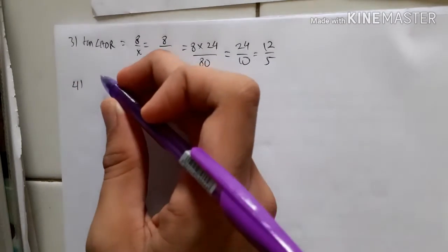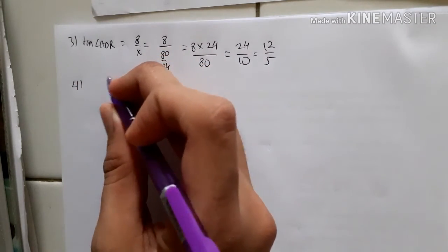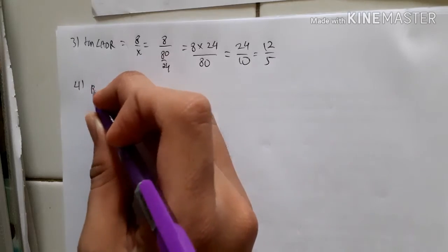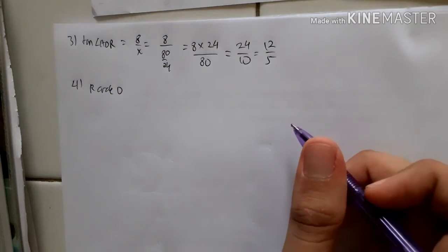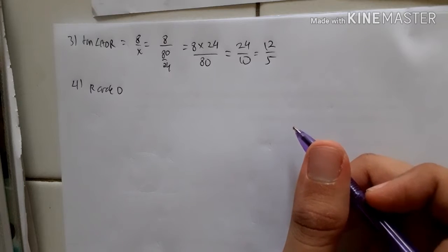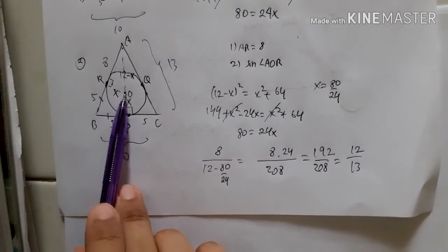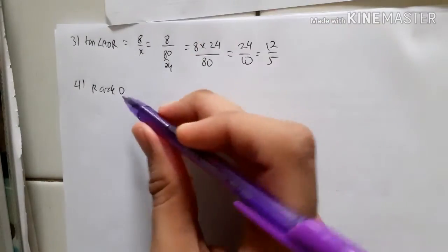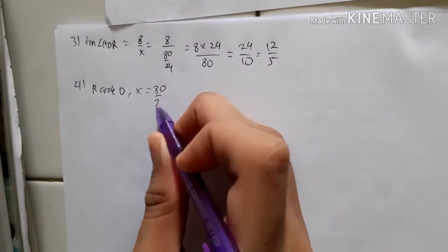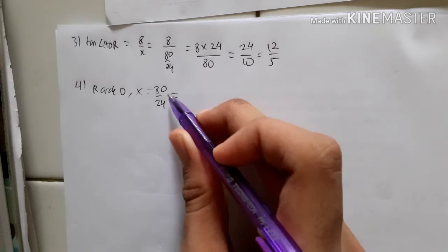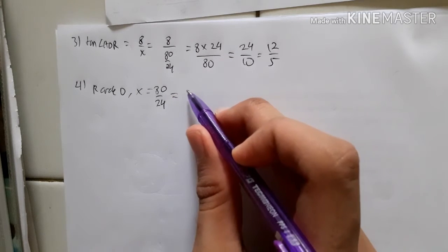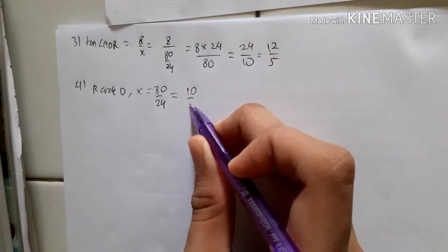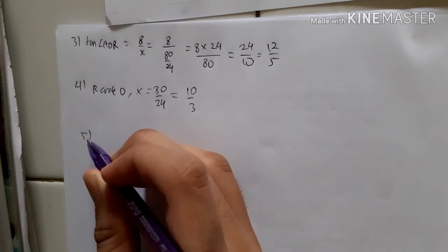For part 4, find the radius of the inscribed circle O. The radius is actually x. We already have x = 80/24, and simplifying by dividing by 8 gives the radius as 10/3.